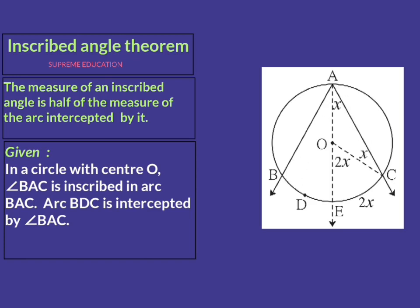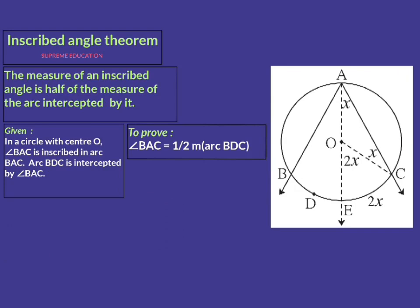The next step is to write what we need to prove. Reading the statement again — the relation between the inscribed angle and the intercepted arc — we have to prove that the measure of the inscribed angle is half of the measure of the intercepted arc. That is, we must prove: measure of angle BAC equals half of measure of arc BDC.